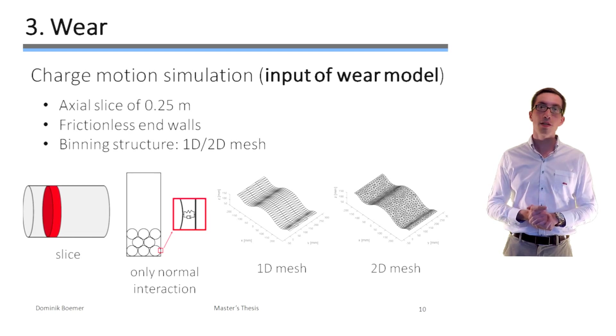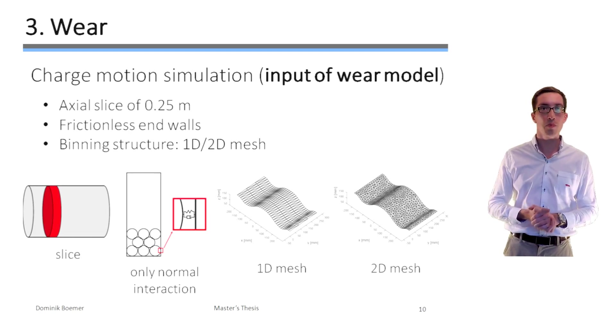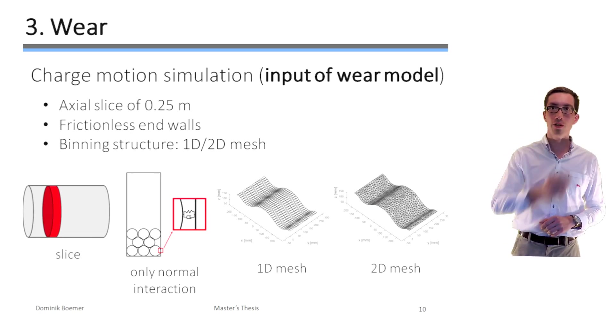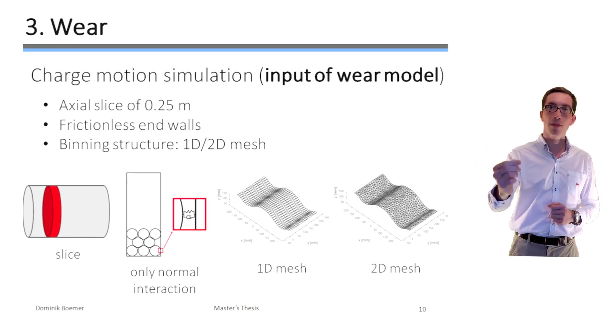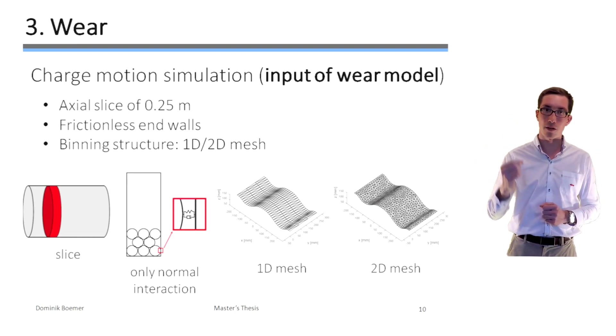So while the 1D mesh is only able to capture the wear distribution along the azimuthal direction, the 2D mesh is also able to capture this variation along the axial direction.